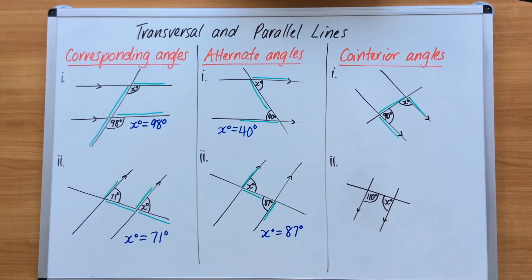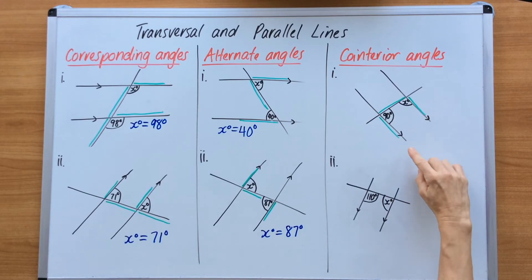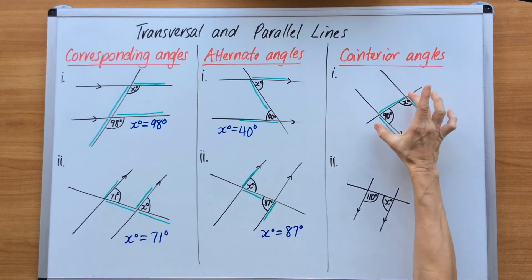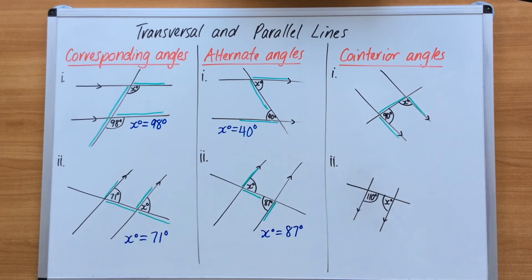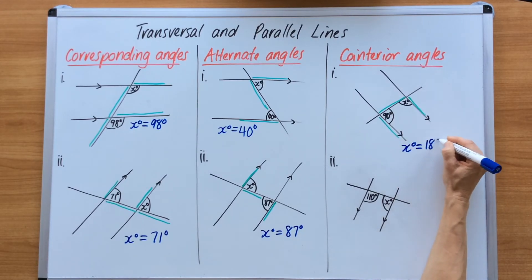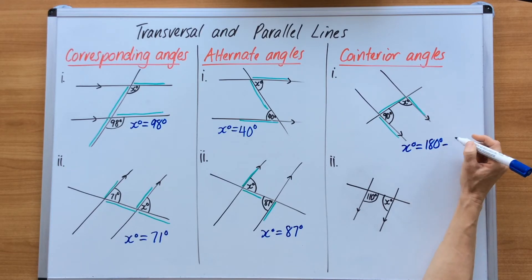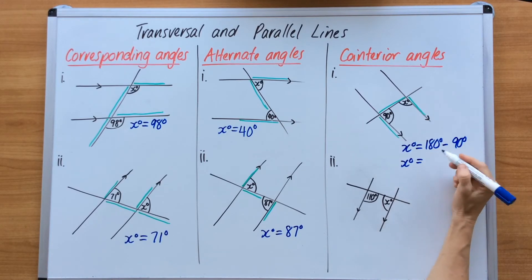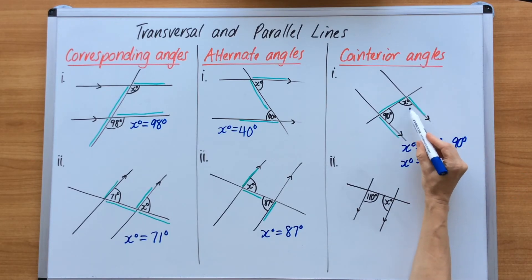Over here on the right we have co-interior angles, and both of those angles add up to 180 degrees. I've already drawn the U shape — we've got the parallel lines and the transversal, and they sit on the transversal line tucked in between the two parallel lines. To find X degrees, we know the total is 180 degrees, and we subtract what we know which is 90 degrees. So 180 degrees minus 90 degrees is 90 degrees — that angle we didn't know is now 90 degrees.